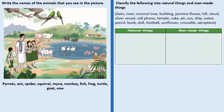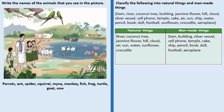Now here we have classification of the following into natural things and man-made things. We need to categorize into natural and man-made. In natural things, whatever is available in nature is called natural things, like river, coconut tree, jasmine flower, hill, cloud, air, sun, water, sunflower, crocodile.